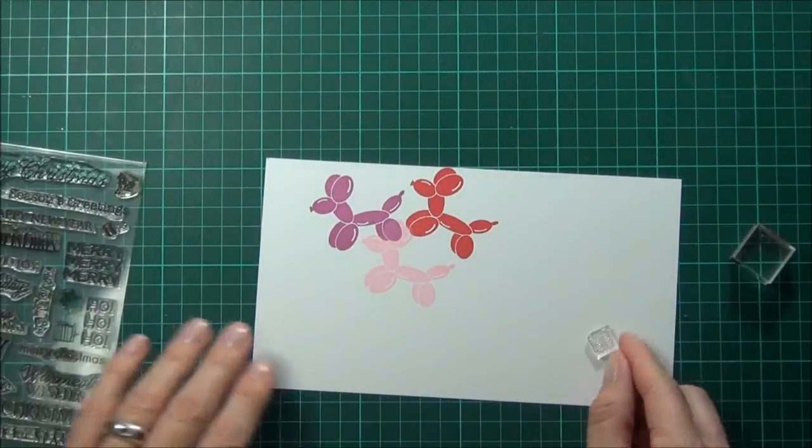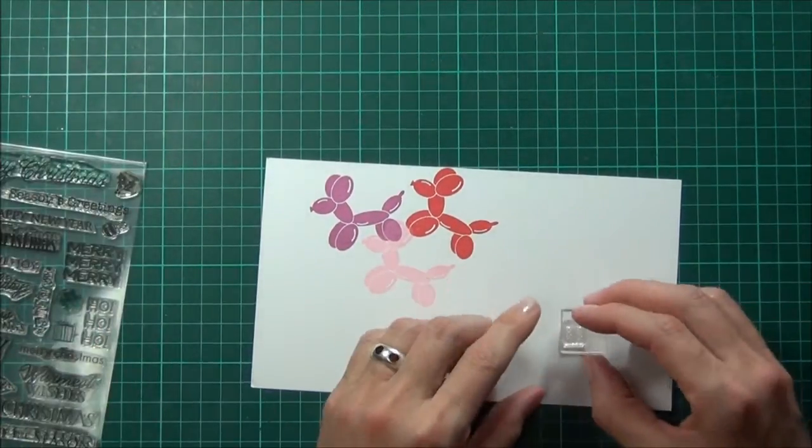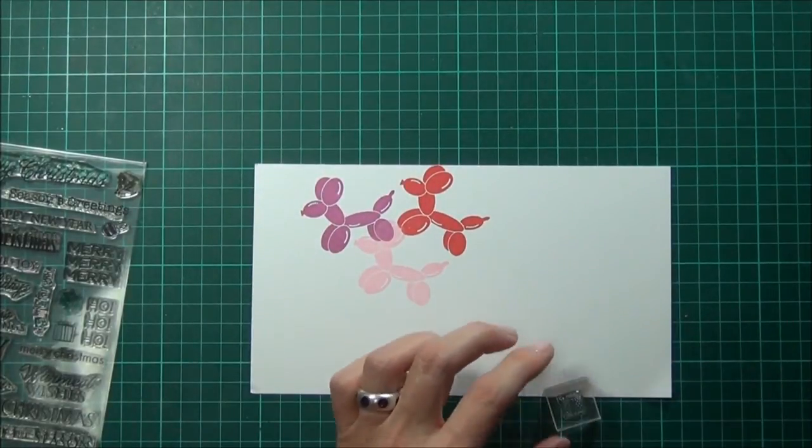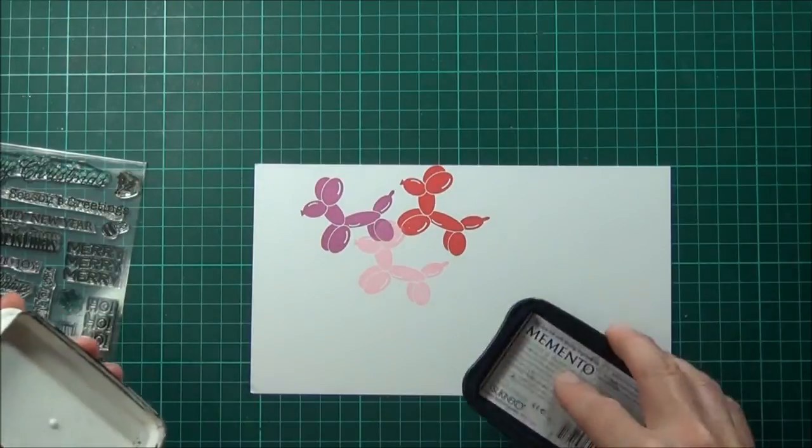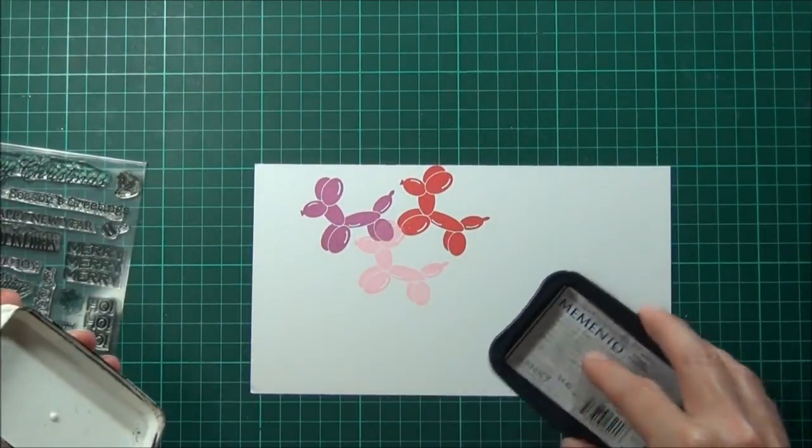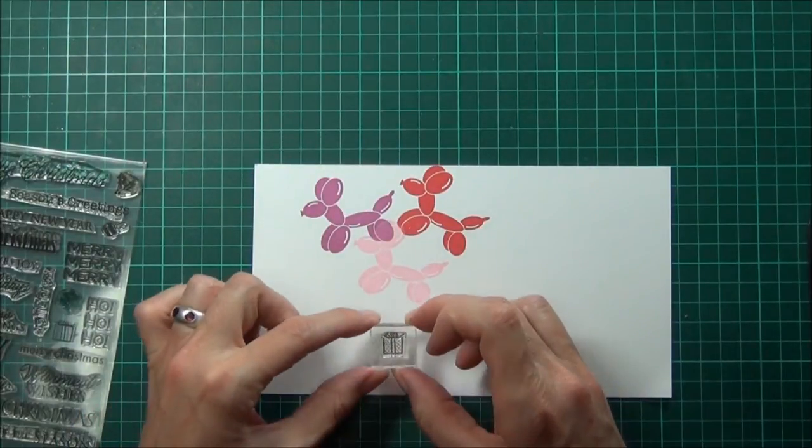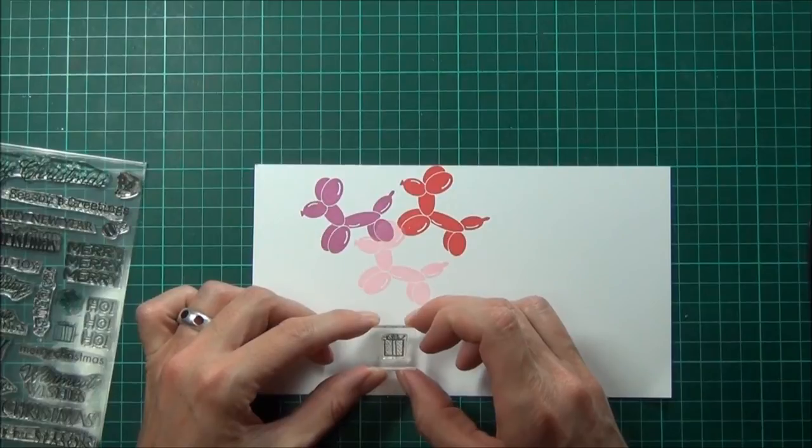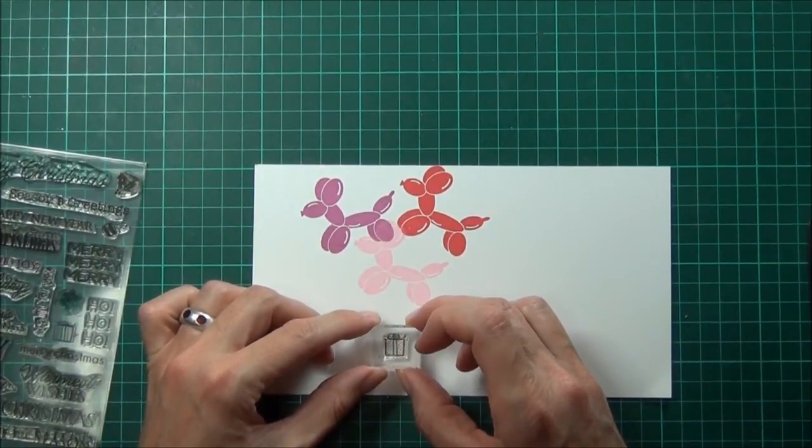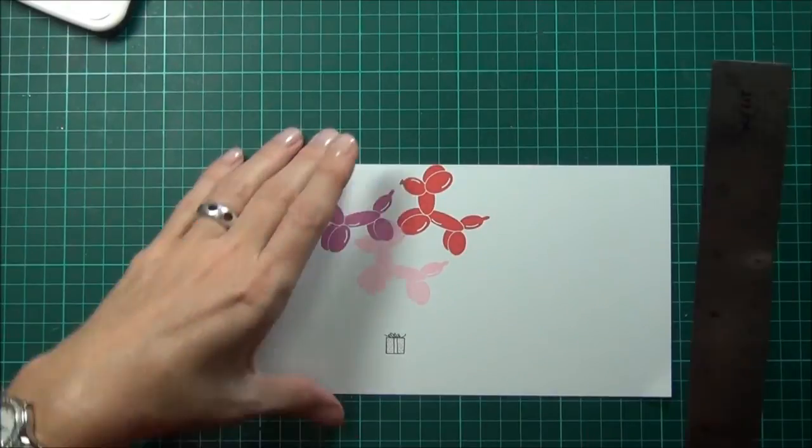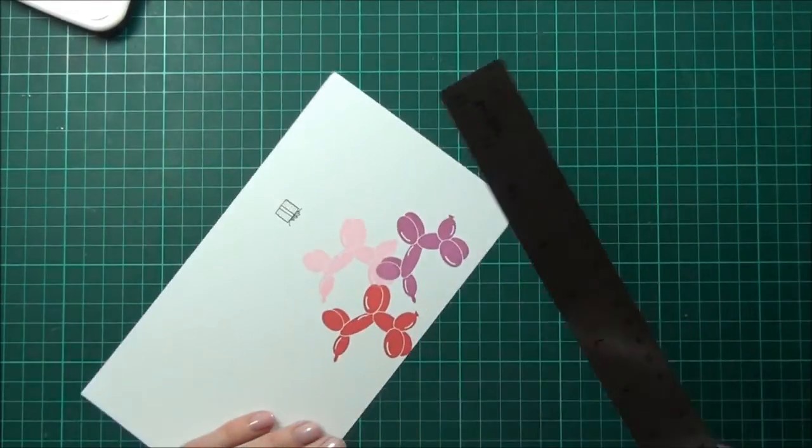I've got a sweet little present from a Hero Arts set called Holiday Saints and some Memento Tuxedo Black. I'm just going to try and stamp that about the middle. Then I'll use a Copic Multiliner to draw some balloon lines.